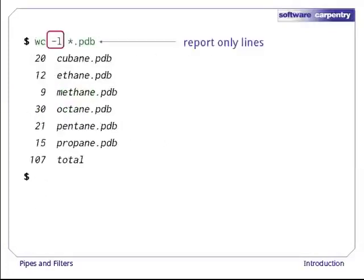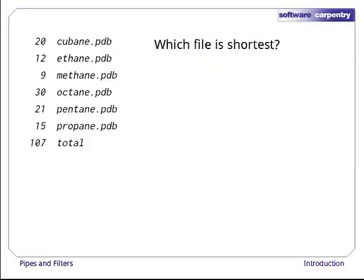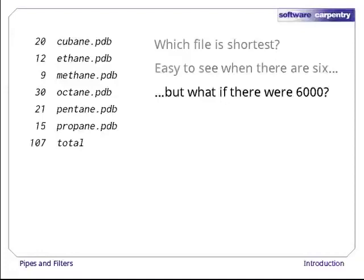If we run wc -l instead, our output shows only the number of lines per file. We can use -w to get only the number of words, or -c to get only the number of characters. Now, which of these files is shortest? It's an easy question to answer when there are only six files, but what if there were 6,000? That's the kind of job we want a computer to do.